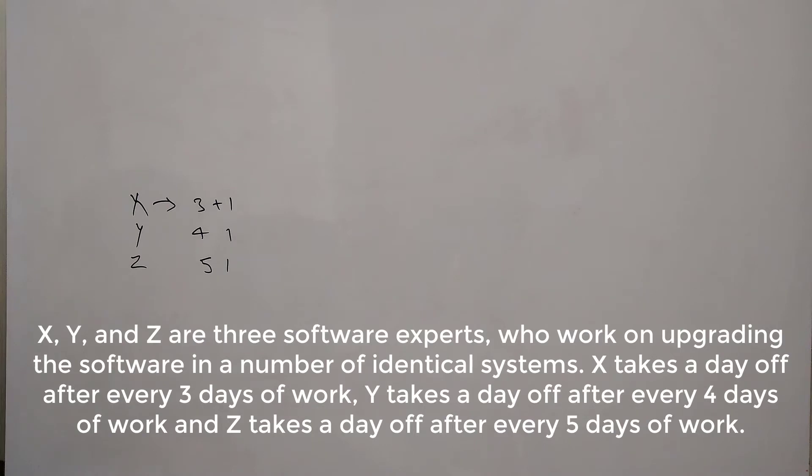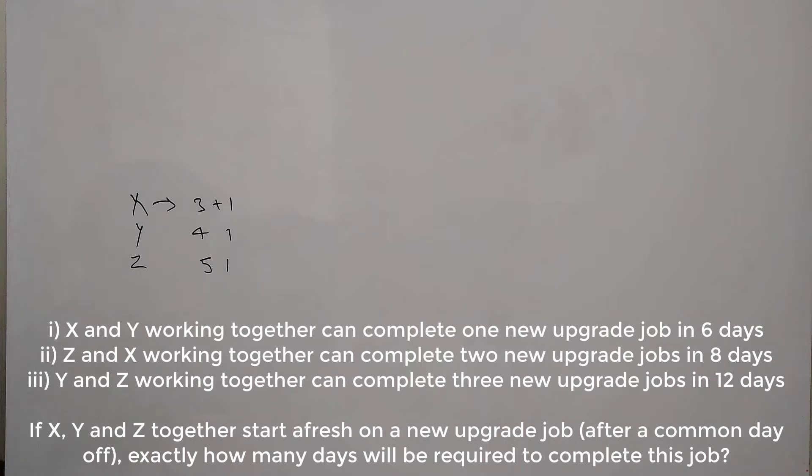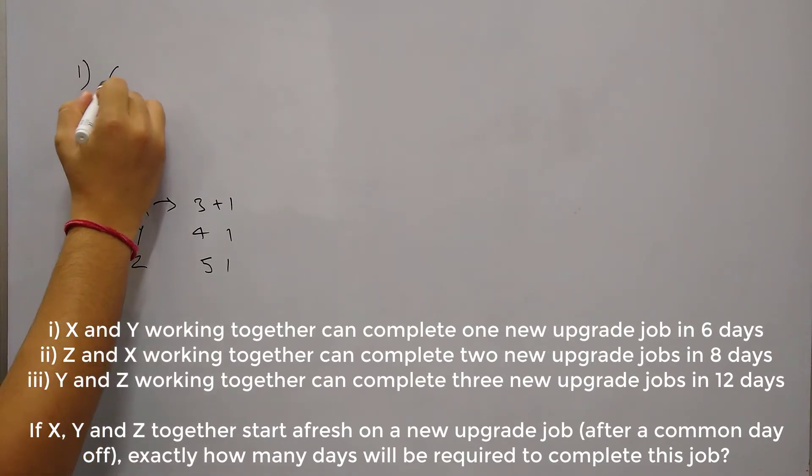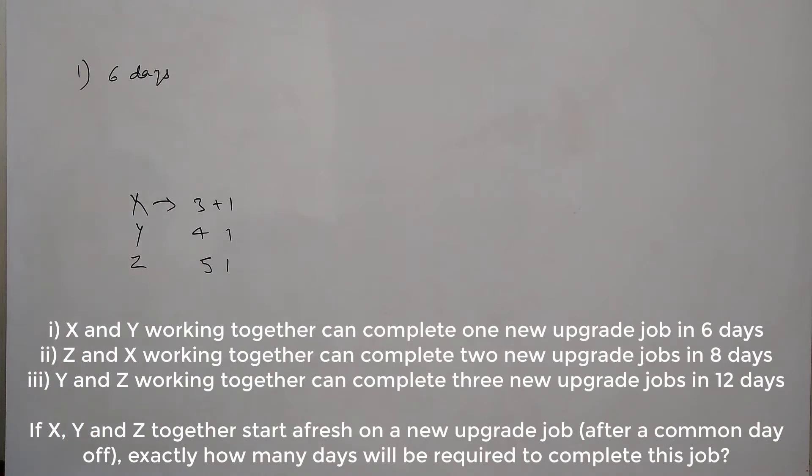Now in the question we have three statements given. X and Y working together can complete one new upgrade job in 6 days. So according to statement 1, in 6 days X and Y are working and they are completing a job. So now X works every 3 days and after that he takes a leave for 1 day. So in 6 days how many days will X work? So if you see 1, 2, 3 days working and then a day off.